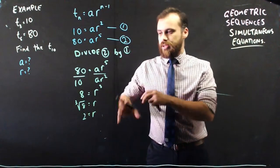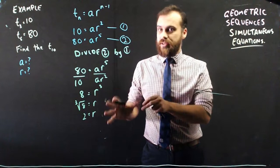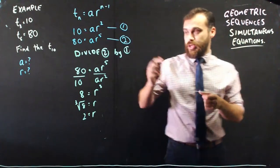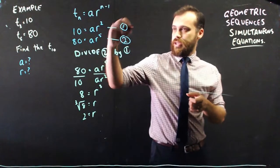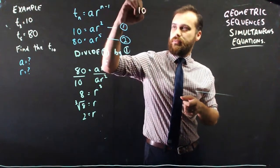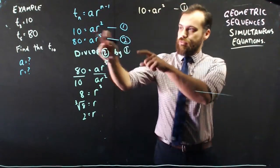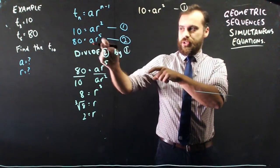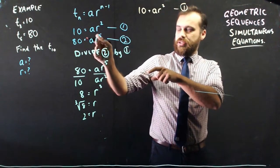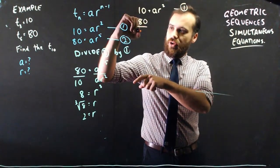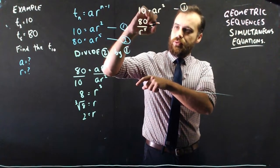That's our way to do it. You've never seen anything like that before. Just to show you there is a way to do it that you do know of, that you have done in the past. I can say that 10 equals ar squared. That's equation 1. And I could rearrange equation 2 to make a the subject. So that means that equation 2 would be 80 divided by r to the 5 equals a.